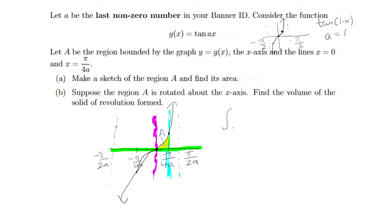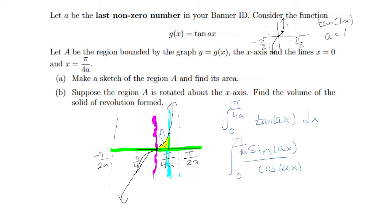The area — we need an integral going from 0 to x = π/4a, and then g(x) = tan(ax) inside. I can rewrite this as sin(ax)/cos(ax). Now, if you don't have the antiderivative of tangent memorized, just so we're clear: the integral of tan(x) is −ln|cos(x)|. So for here, you would put −ln|cos(ax)| divided by a for the antiderivative.